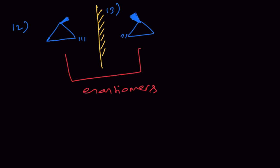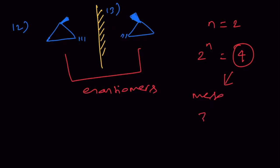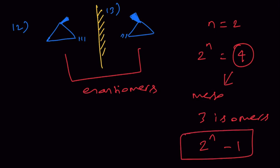Remember that when you have two chiral centers, we normally expect 2^n stereoisomers, which would be four. However, when you have a meso compound, you do not get four isomers — you get only three, which is 2^n minus 1. What you need to check is whether a plane of symmetry exists in the molecule, i.e., whether half the molecule is a mirror image of the other half. Chiral centers are one condition — minimum two — but a plane of symmetry must also be present. That is why all achiral molecules are not meso, but all meso compounds are achiral.